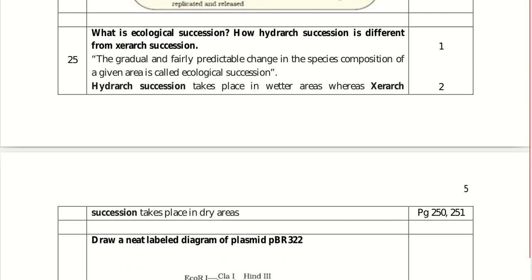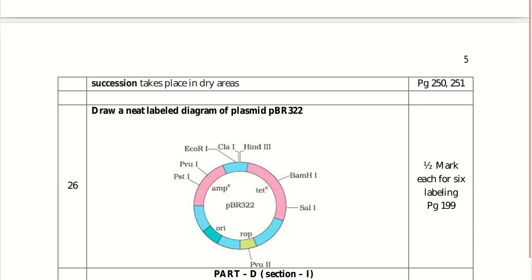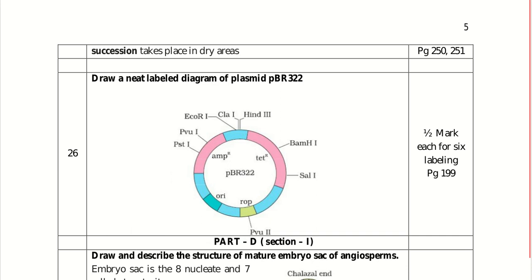Draw a neat labelled diagram of plasmid pBR322. It is a circular diagram with two genes: the ampicillin-resistant gene and the tetracycline-resistant gene. Mark the ORI site, ROP, and various restriction enzyme binding sites such as PVU2, PHD1, PVU1, EcoR1, CLA1, HIN3, BANH1, and SAL1. Half a mark for each labelling; six labellings fetch three marks.